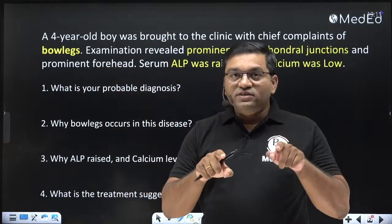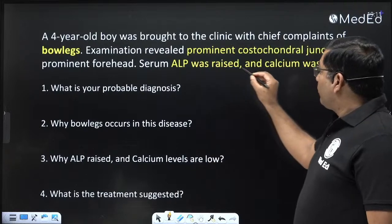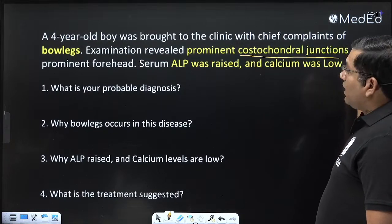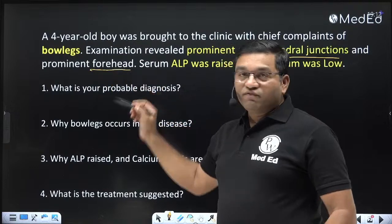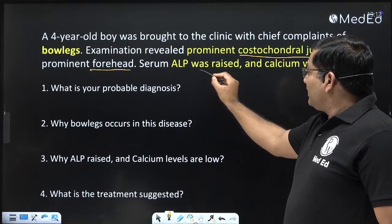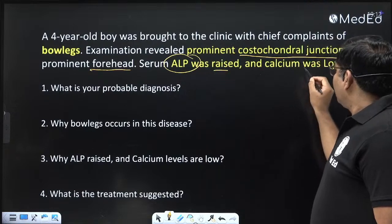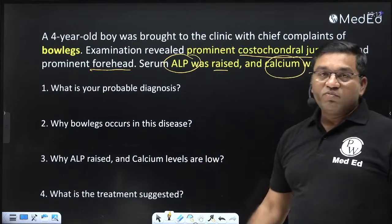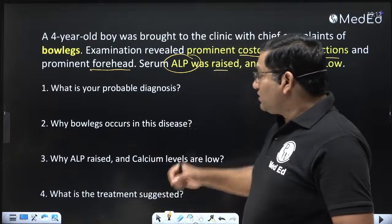A four-year-old boy was brought to the clinic with chief complaints of bow legs — curved legs. Examination revealed prominent costochondral junctions and a prominent forehead. Serum alkaline phosphatase was raised and calcium was low. What is your probable diagnosis?